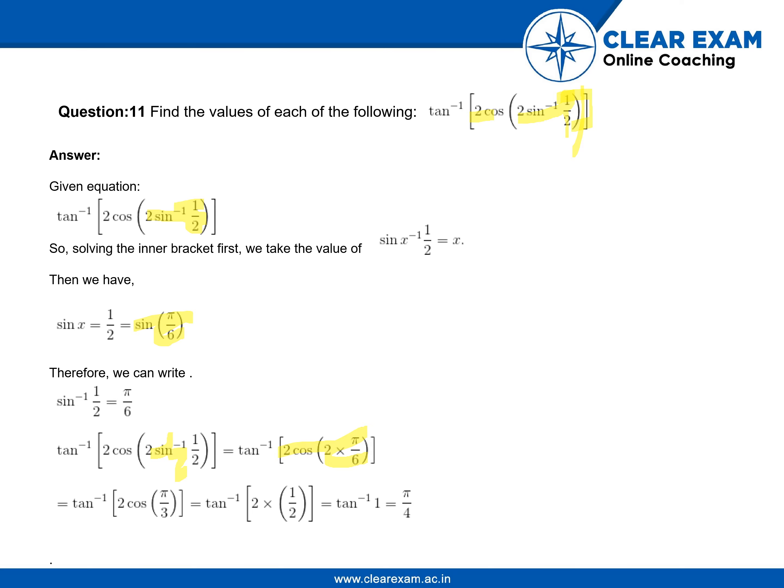And we know the value of cos pi by 3, which is equal to half. And tan inverse of 2 into half, that is 1. So tan inverse 1 is pi by 4.